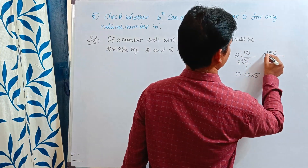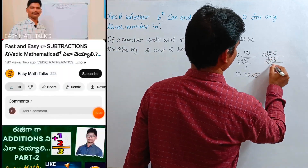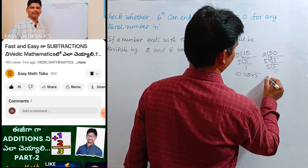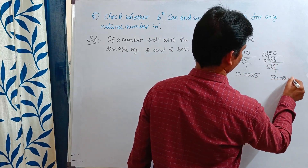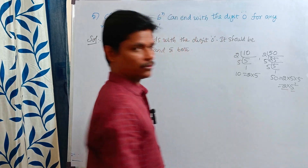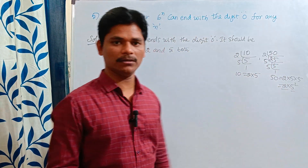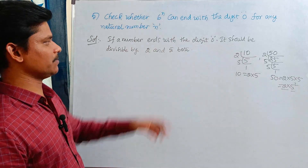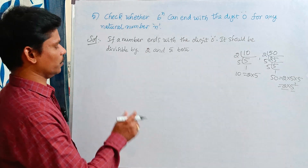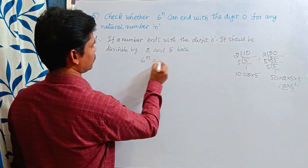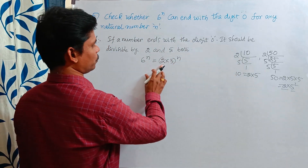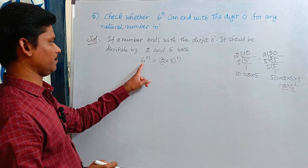Or, suppose take 50: 2 × 5 × 5. So 2 and 5 are factors; 50 ends with 0 and is divisible by 2 and 5. So that's why if a number ends with the digit 0, it should be divisible by both 2 and 5. See here: 6^n = (2 × 3)^n. So 2 and 3 are the prime factors of 6.